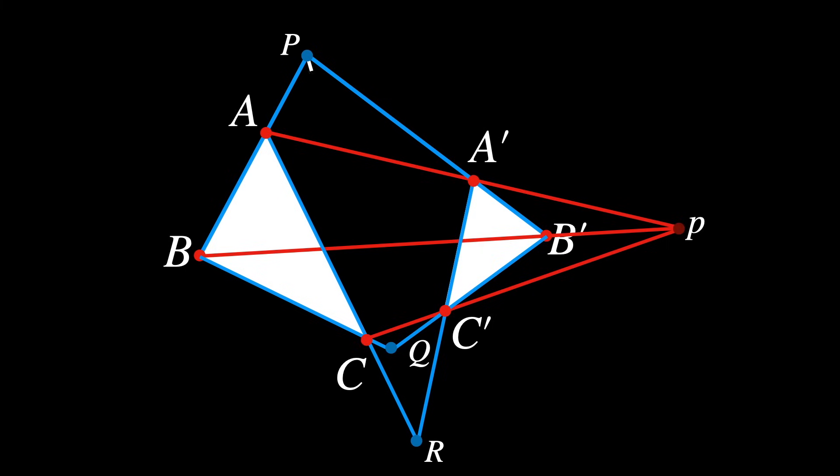According to this theorem, the points P, Q, and R will lie on a straight line, known as the axis of perspectivity.